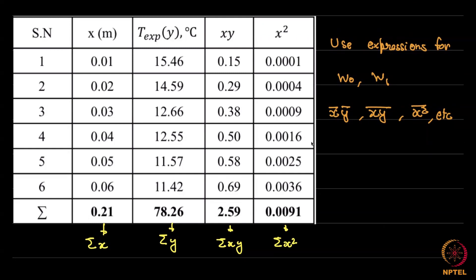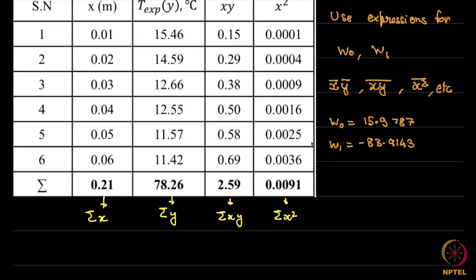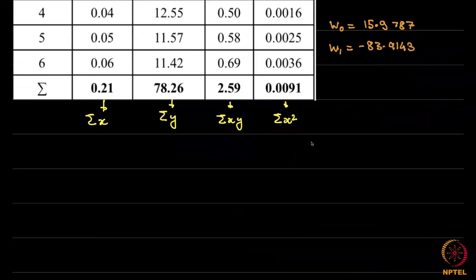In the final exam, if you take this course for credit, then we will figure out how to give you a calculator in order to compute these reasonably fast. So once you come here, we get these values. As I wrote down in the previous slide, w0 is 15.9787 and w1 is minus 83.9143. Now once you have these values, we can now determine the temperatures.